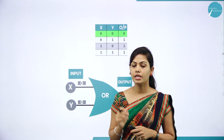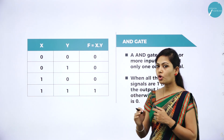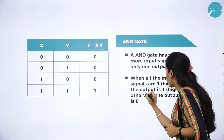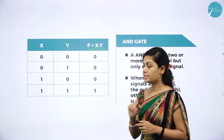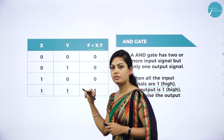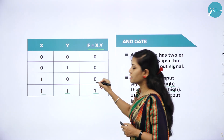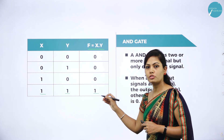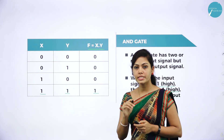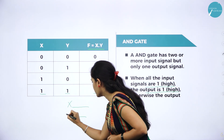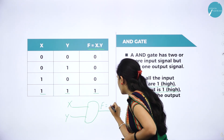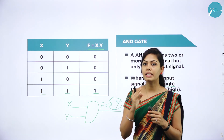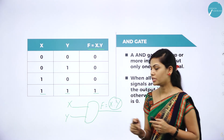Next is the AND gate. AND gate has two or more input signals but only one output signal. When all the input signals are high, the output is high (1); otherwise the output is 0. In OR gate we use logical addition, but in AND gate we use logical multiplication — that is the dot (·) operator. So F = X · Y.